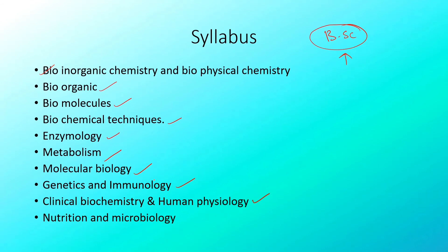Nutrition and Microbiology: Nutrition covers different nutritional modes, and importantly, vitamins — their sources, types, and deficiency diseases, which are very important and carry 2–3 questions. Microbiology basics include the ultrastructure of bacteria, prokaryotic vs. eukaryotic cells, history of microbiology, bacterial structures, classification of microorganisms, staining techniques, and microscopy.